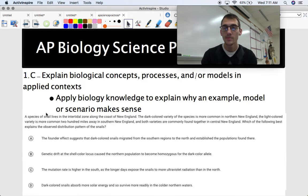It says the species of snail lives in the intertidal zone along the coast of New England. The dark-colored variety of the species is more common in northern New England, while the light-colored variety is more common in 200 miles away in southern England, and both varieties are commonly found together in central New England. Which of the following best explains the observed distribution of the pattern of snails? So there it is again, explains the observed distribution. So you're using, as I put up here, you apply your biology knowledge to explain why an example, a model, or a scenario makes sense. I can't talk today.